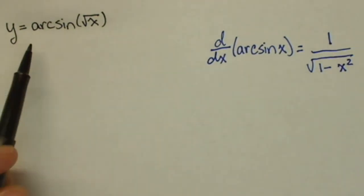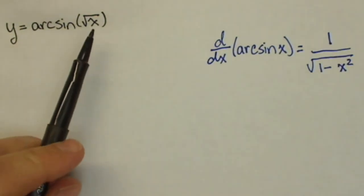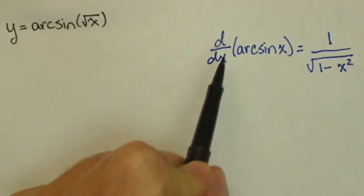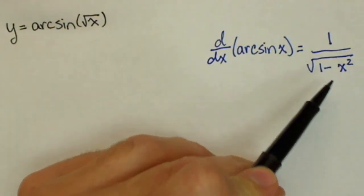So we need to find the derivative of y equals arc sine of square root of x, and the basic derivative of arc sine of x is 1 over the square root of 1 minus x squared.